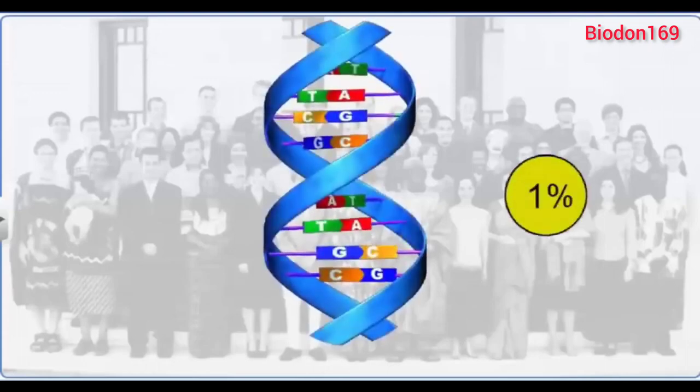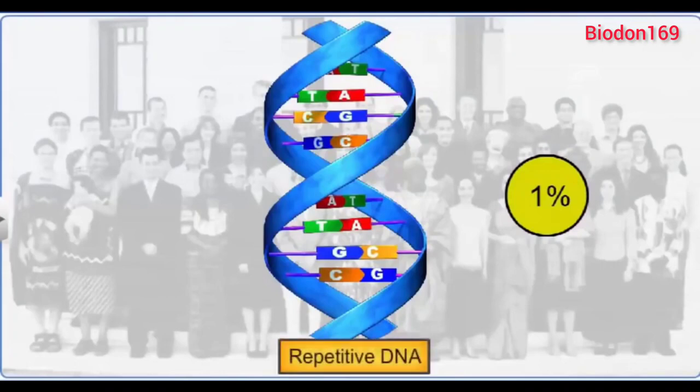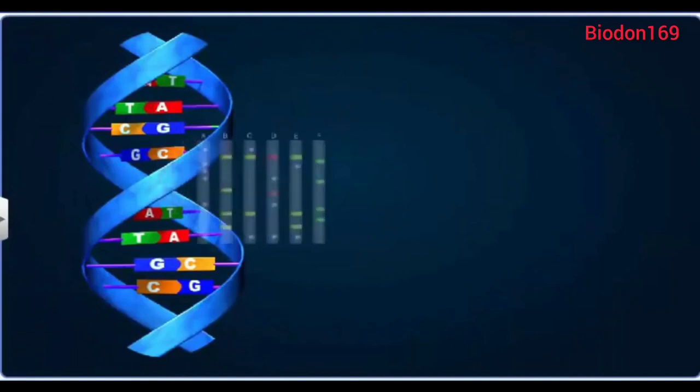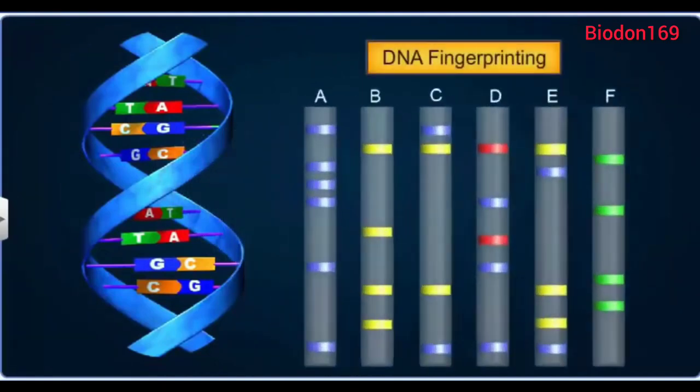The remaining 1% DNA base sequences differ and are present as a small stretch of repeated sequences, known as repetitive DNA. DNA fingerprinting identifies the differences in this region.